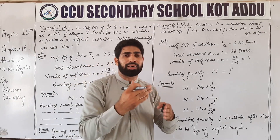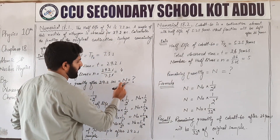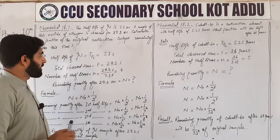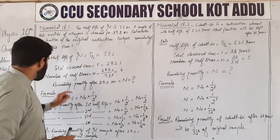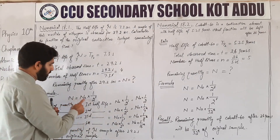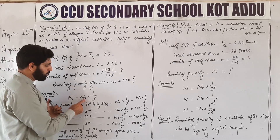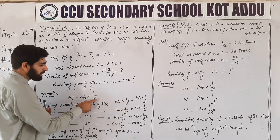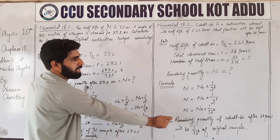تو 4 half life periods گزارنے ہیں۔ Remaining quantity after 29.2 seconds ہم نے find out کرنی ہے۔ Formula ہے: N = N₀ × (1/2)^t، جہاں t number of half lives ہے۔ اسے direct اور indirect دونوں طریقوں سے حل کیا جا سکتا ہے۔